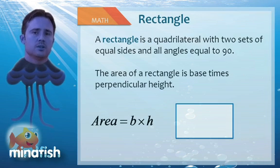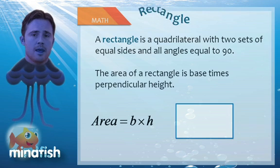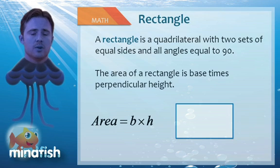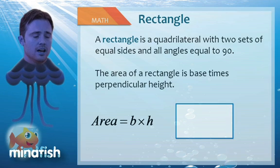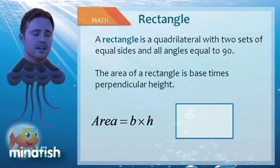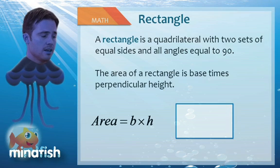A rectangle is just a specific type of parallelogram, in which not only we have two sets of parallel sides, but we have two sets of equal sides. Nicely, all angles are going to be 90 degrees, and the area is going to be base times height.